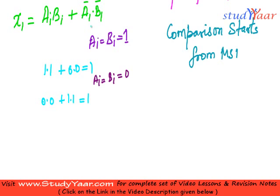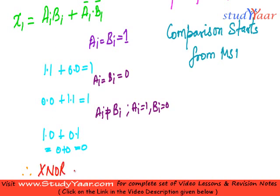Also check when they are different. Let's suppose Ai is not equal to Bi. Let's suppose Ai is equal to 1 and Bi is equal to 0. Then what do I get? I get 1 dot 0 plus 0 dot 1 which is equal to 0. Therefore I can say that XNOR gives a positive output, high output, or for that matter high is 1, gives a high output.